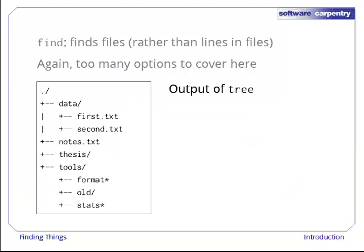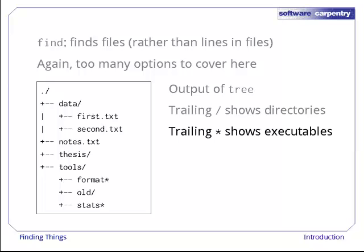Here's a textual representation of that same tree, created using the Unix tree command. As with ls -F, trailing slashes show directories, and trailing stars show files we could run as programs.